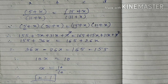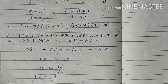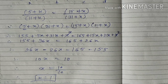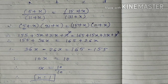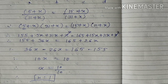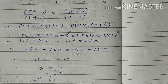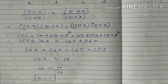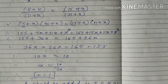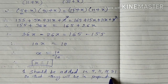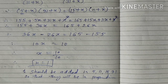If the value of X is 1, that means 1 should be added to 5, 11, 15, and 31 so that they will be in proportion. Here we completed the exercise.